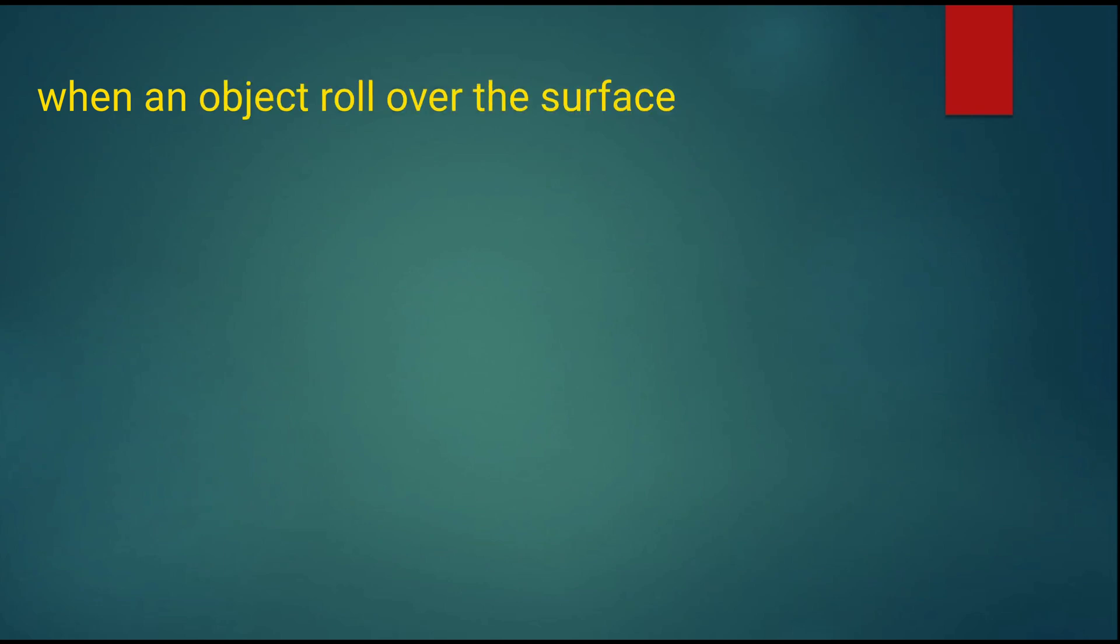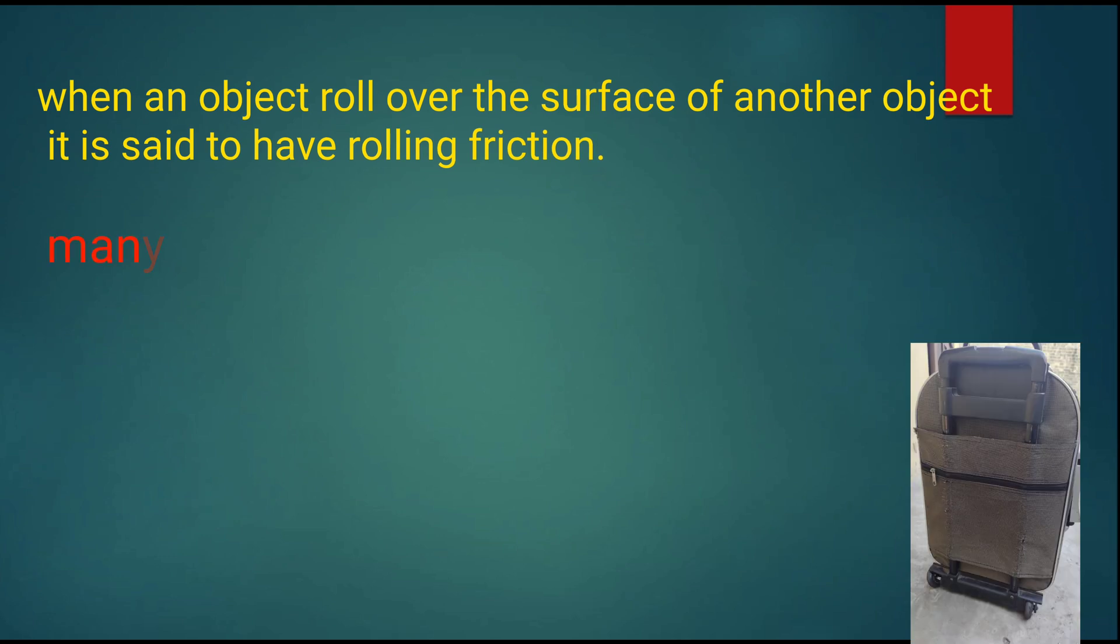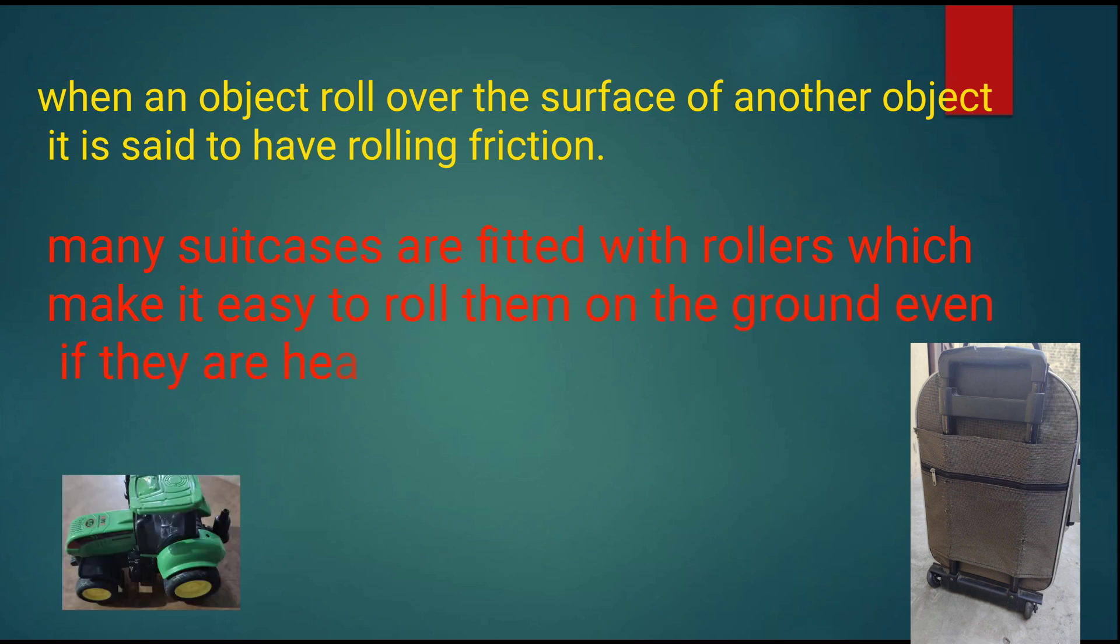When an object rolls over the surface of another object, it is said to have rolling friction. Many suitcases are fitted with rollers which make it easy to roll them on the ground even if they are heavy. Things on wheels have rolling friction.